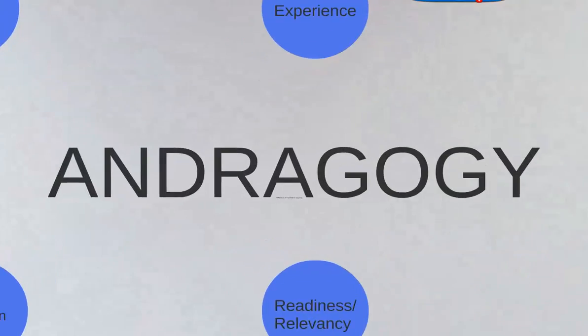Andragogy as a term was first coined in 1833 by Alexander Kapp. It was made popular by Malcolm Knowles — you're probably more familiar with that name — in the late 1980s. Pedagogy means methods and techniques for teaching children. Andragogy means the methods and techniques for teaching adults. And one thing we can say for sure is that adults are different. I have a short video that kind of emphasizes that.